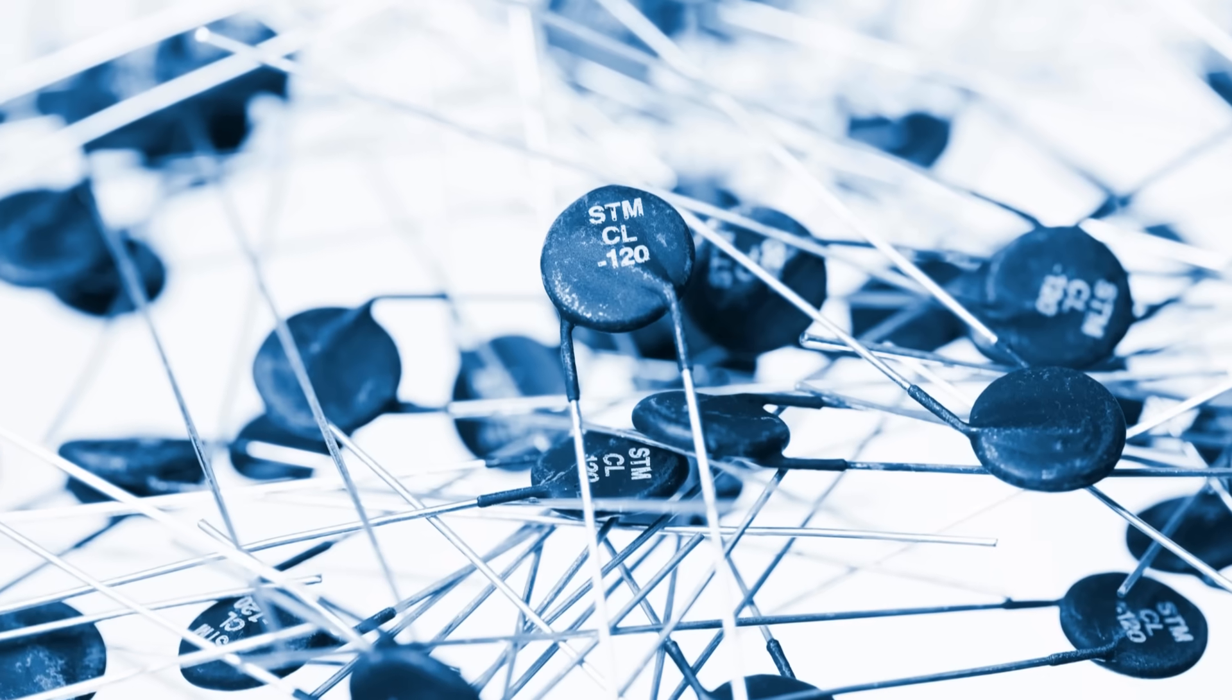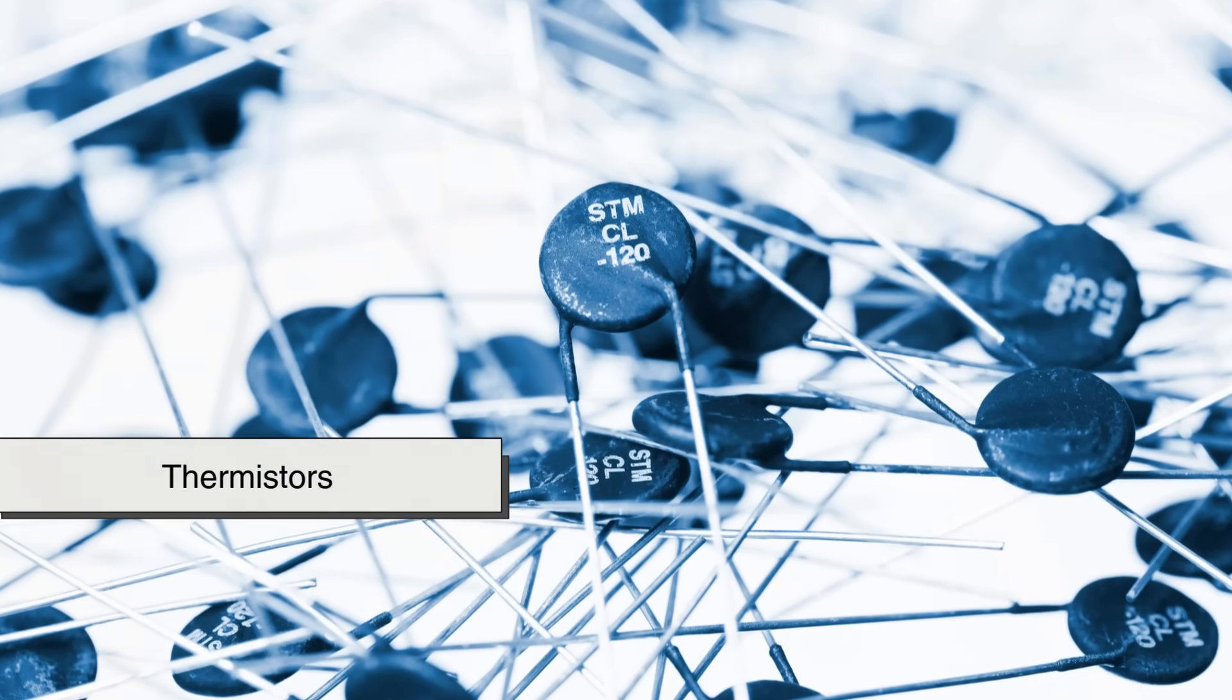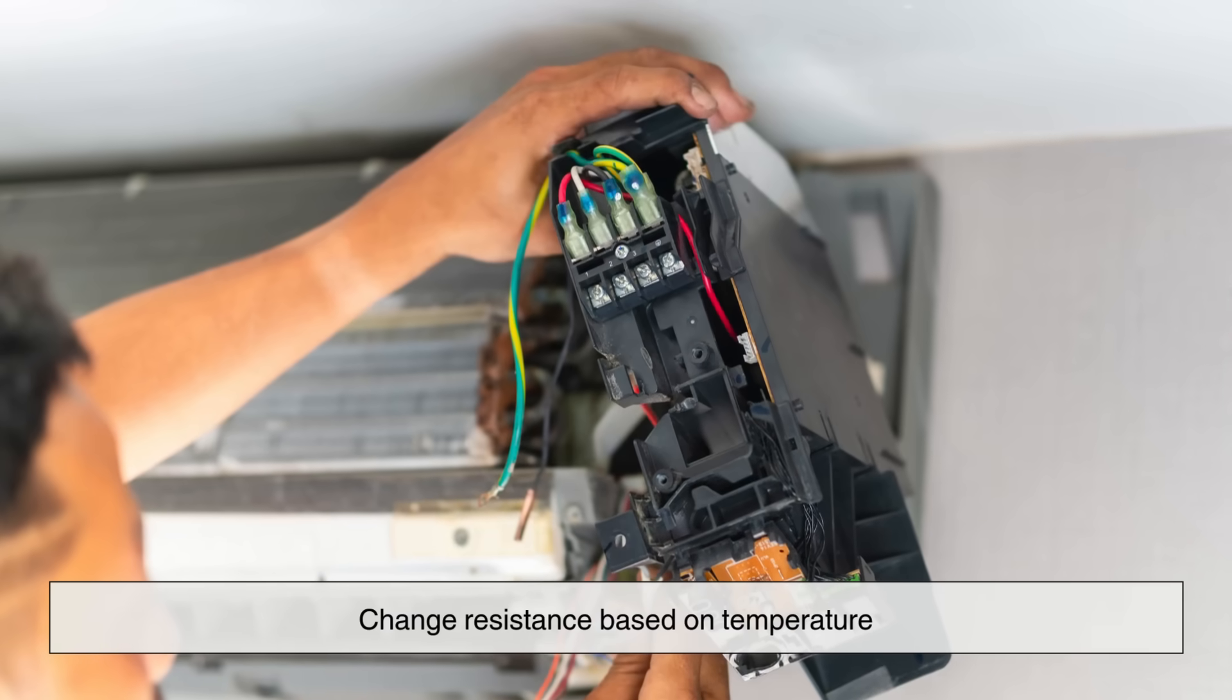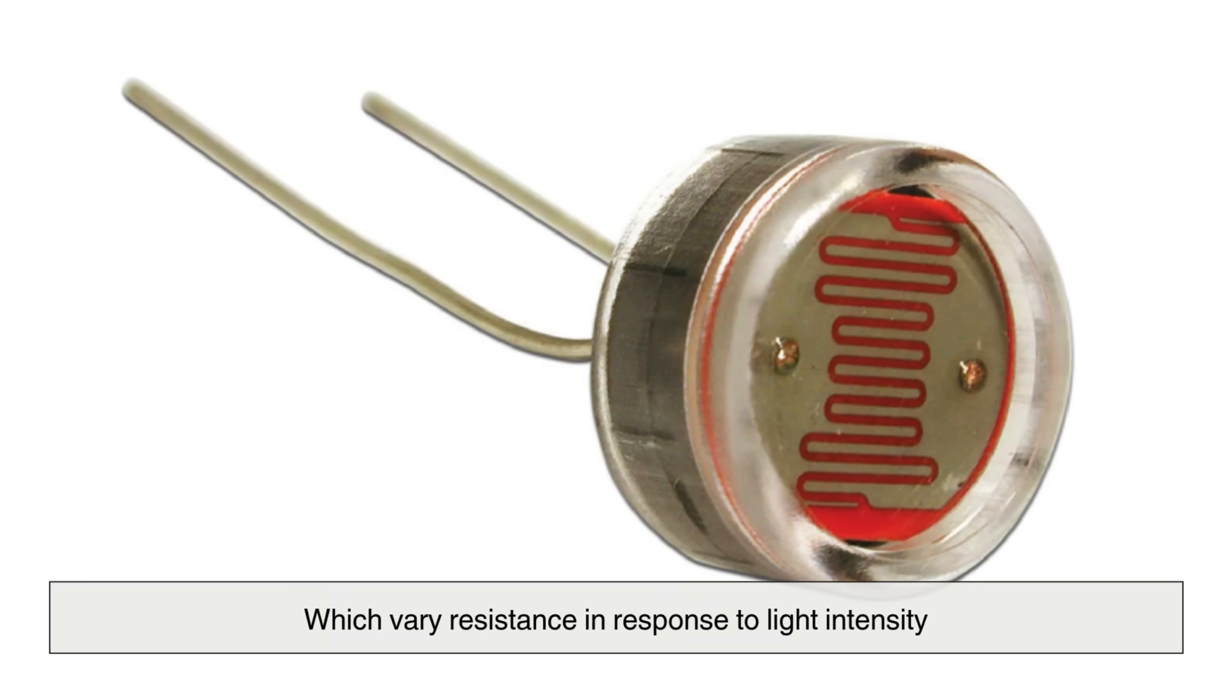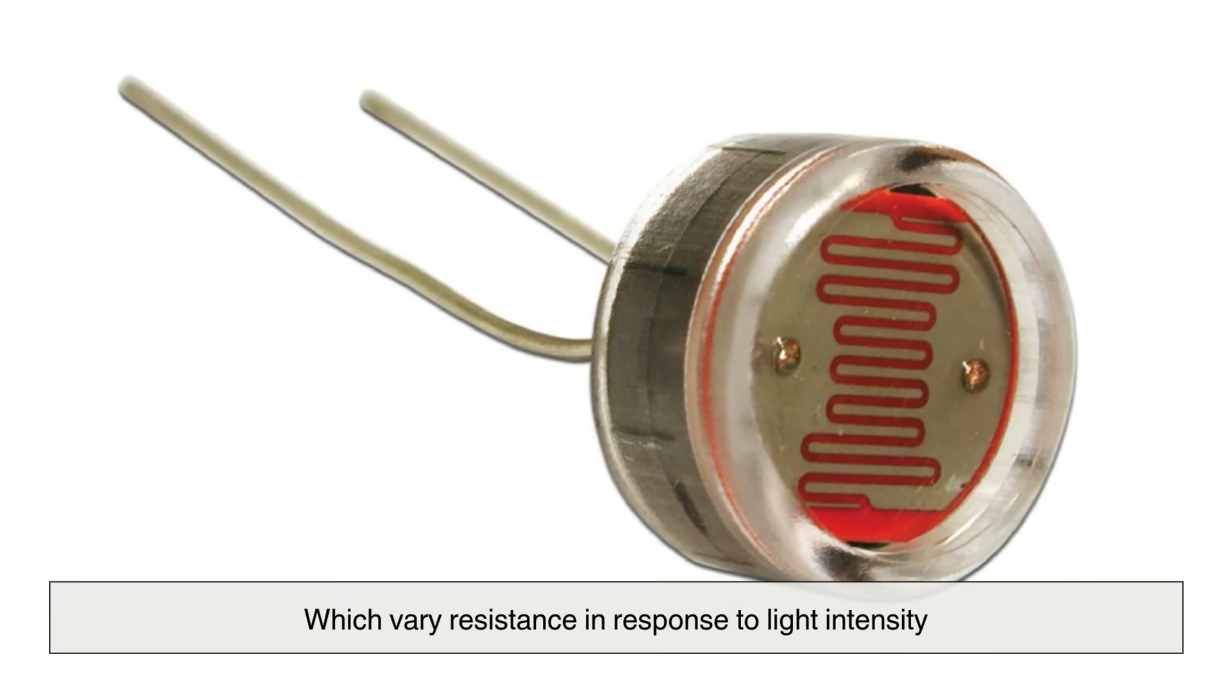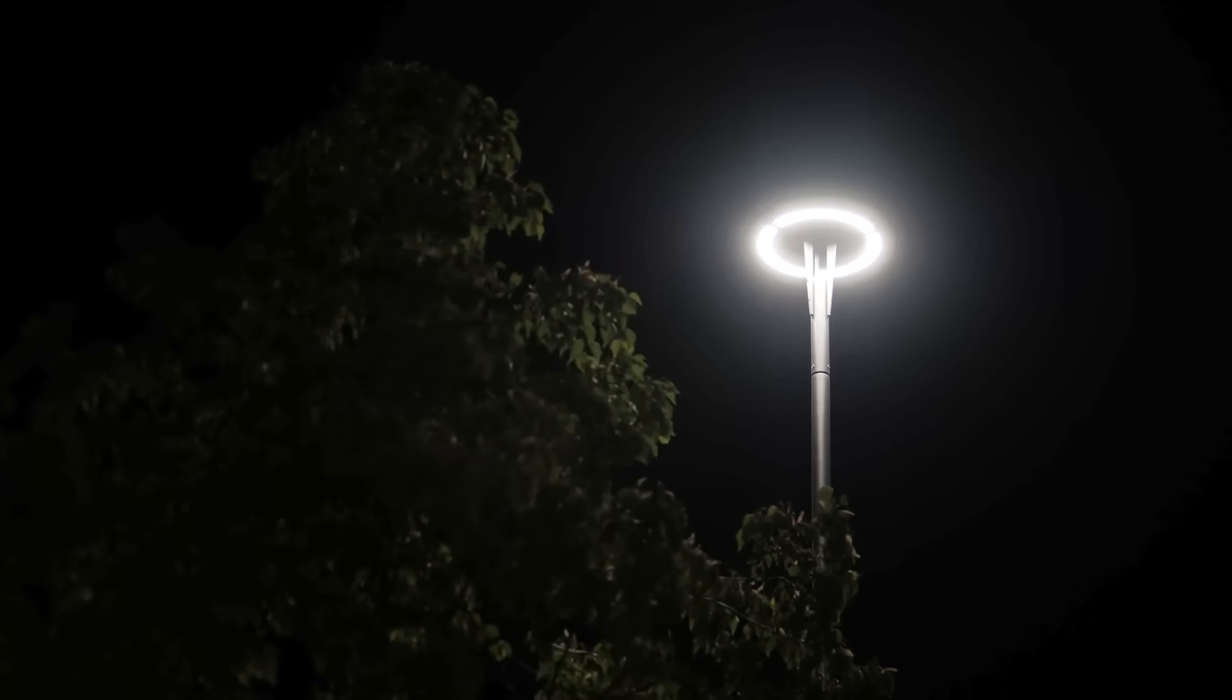There are also special purpose resistors like thermistors, which change resistance based on temperature, and light-dependent resistors or LDRs, which vary resistance in response to light intensity, commonly used in automatic street lighting.